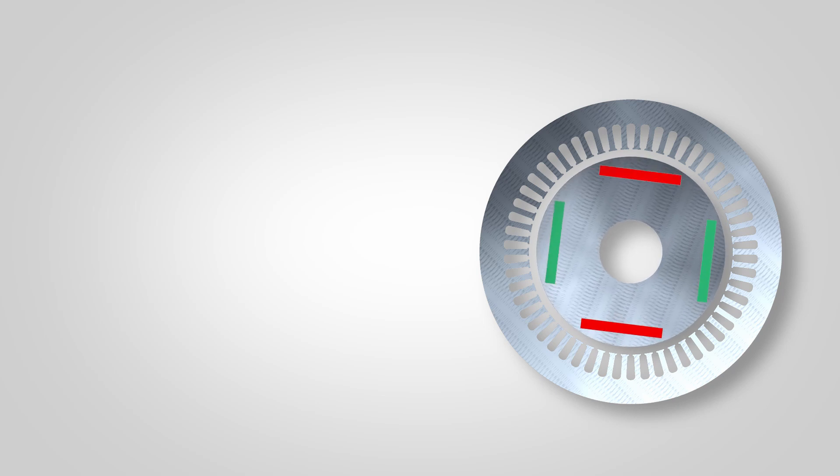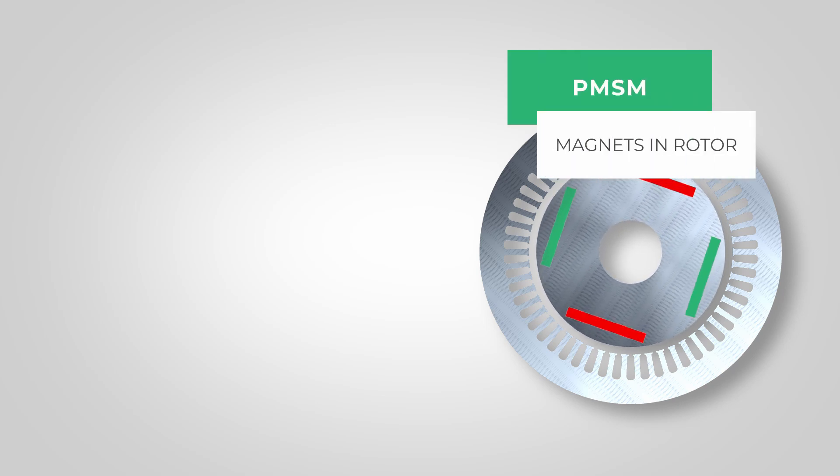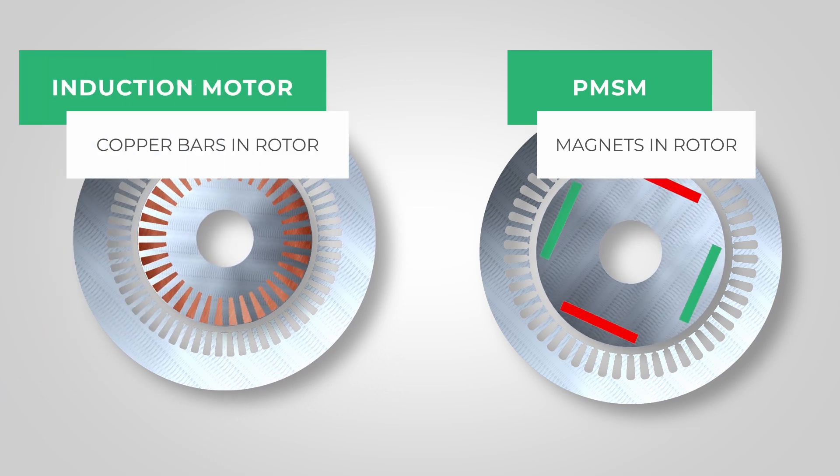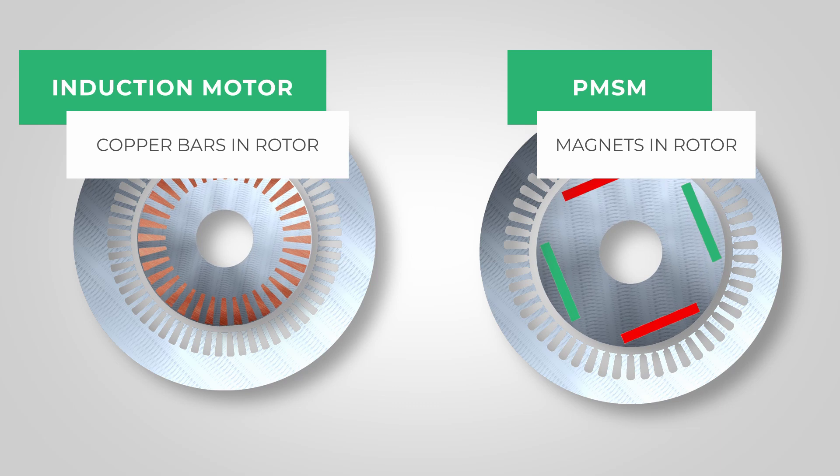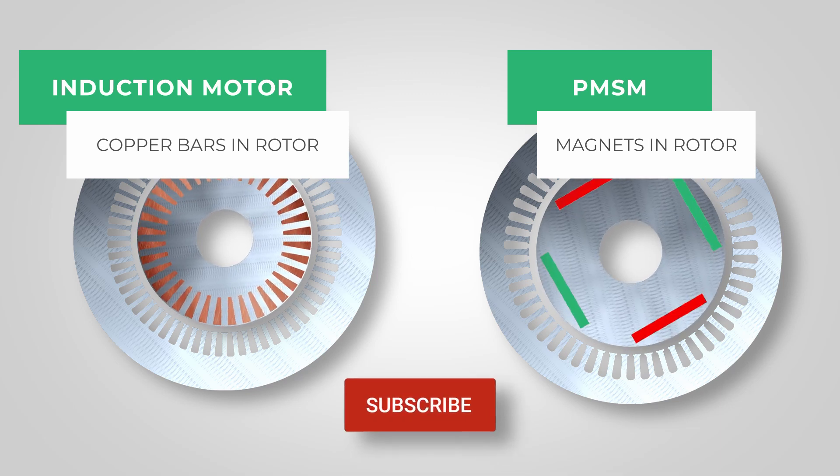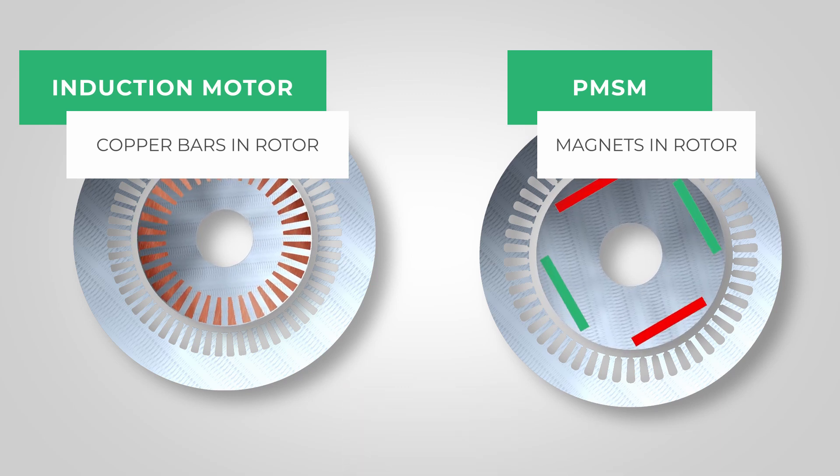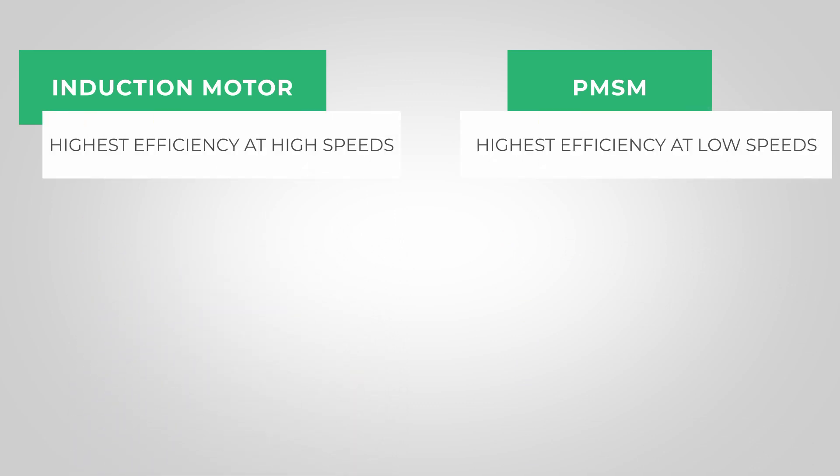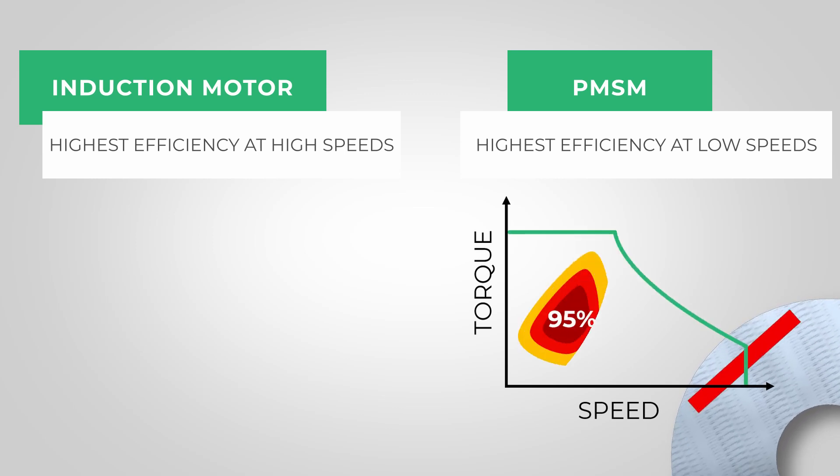A PMSM has permanent magnets in the rotor which follow the rotating magnetic field of the stator. Because induction motors have copper bars in the rotor instead of permanent magnets, an additional current is required in the stator to generate a magnetic field in or from the rotor. This results in the lower efficiency of induction motors in the lower speed range than synchronous motors with permanent magnets.